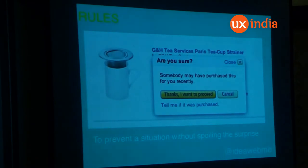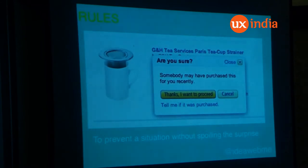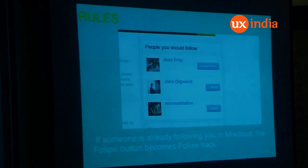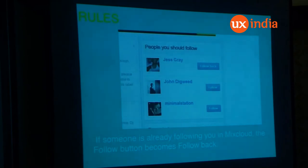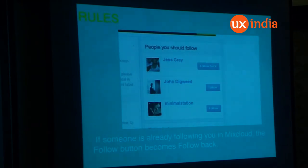This is one example by Amazon: if you have already wishlisted some item, or someone else has wishlisted this item for you and you still want to purchase it, they show the option 'somebody may have purchased this for you recently.' They prevent the situation without spoiling the surprise. The next one is from Mix Club. Rather than giving you an option with confusing states like 'follows you,' 'follow you back,' or 'this person is already following you,' they just cleared the clutter and it shows you 'follows back.'